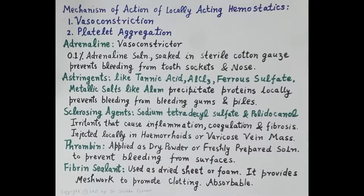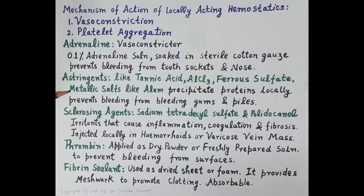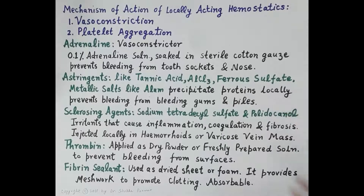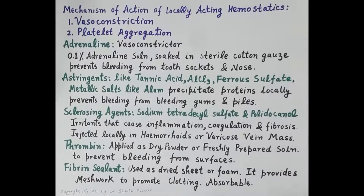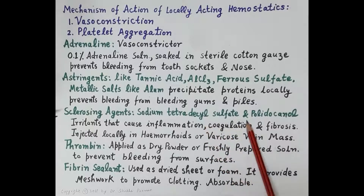Astringents such as tannic acid, aluminium chloride, ferrous sulfate, and metallic salts like alum precipitate protein locally, making the bleeding surface rough. They prevent bleeding from bleeding gums and bleeding piles. The next hemostatic agents are sclerosing agents, for example sodium tetradecyl sulfate and polydocanol.